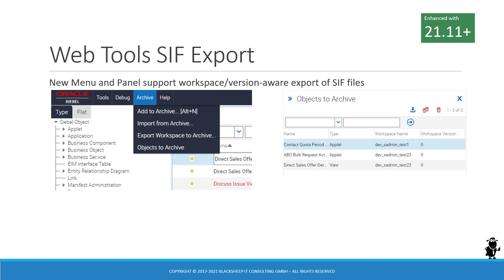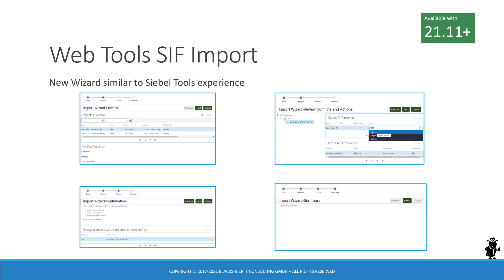If you click Objects to Archive, a panel opens — a list applet of sorts — where you see all the objects currently selected for exporting, or for modifying the list, like clearing the list or deleting individual objects before you export them. CIF file export is not entirely new in Web Tools, but it is greatly enhanced. The import capability for CIF files is new in Web Tools 21.11 and higher.